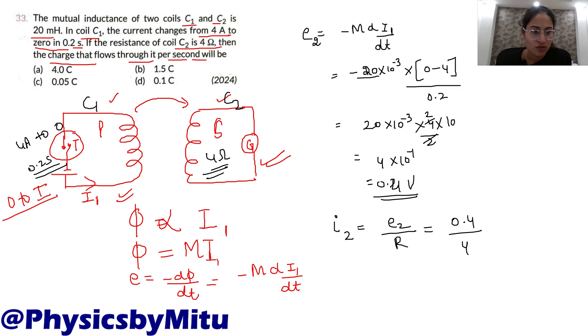You have to find the charge that flows through it per second. i is q upon t. Time is one second, so if current is 0.1, then charge is also 0.1. So 0.1 coulomb. i2 is q upon time, so q equals i2 times t. i2 is 0.1, time is one second, so 0.1 coulomb.